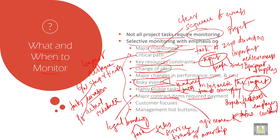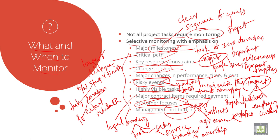Then what are management hot buttons? You should always have customer focus and give more importance to customer requirements. Hot buttons are behaviors like anger which can cause us to react destructively. They cause fights and conflicts, so they should be kept in control — they add emotional fuel to the fire. So not all tasks require monitoring, but selective monitoring with emphasis on these factors.